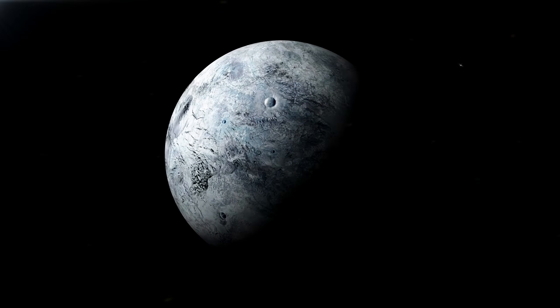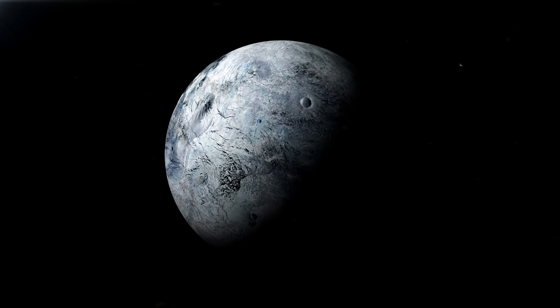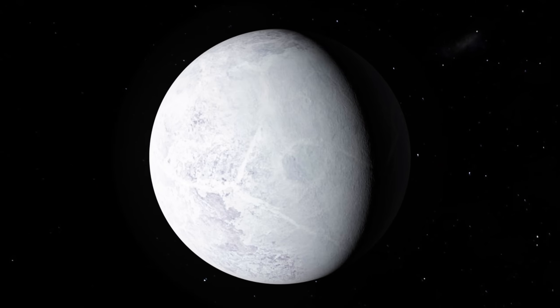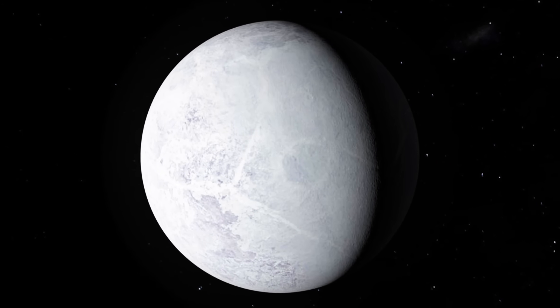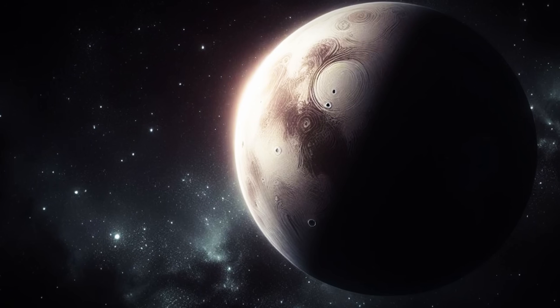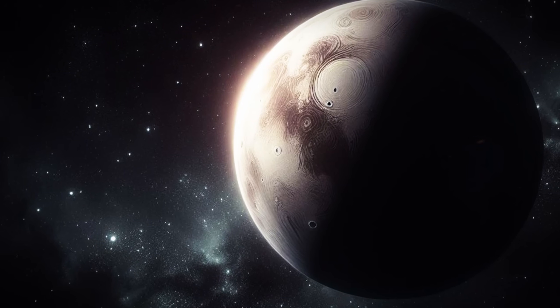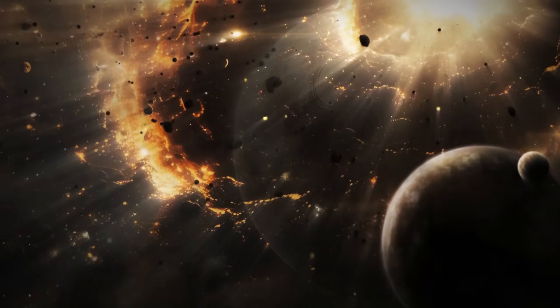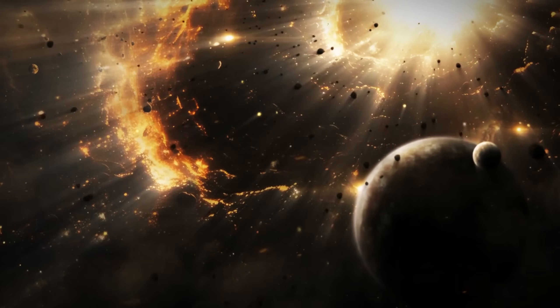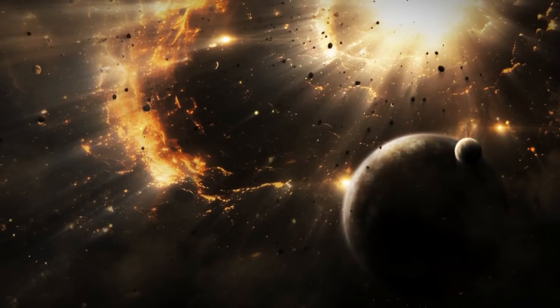Eris, discovered in 2005, is slightly smaller but more massive than Pluto, with a diameter of around 2,326 km. Its discovery played a crucial role in reshaping the classification of planets and expanded our knowledge of the Kuiper Belt's diversity. These dwarf planets provide key insights into the belt's composition, evolution, and significance in the solar system's history.